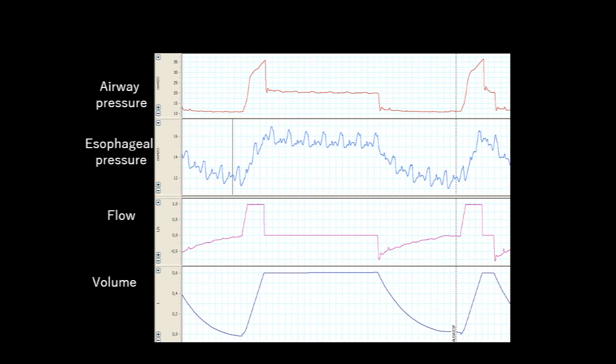During an inspiratory hold, we measure the difference in airway pressure between PEEP and plateau pressure. This is the total pressure generated by the respiratory system, 10 cmH₂O in this case. On the esophageal pressure, we measure the pressure swing at the same time point, which is the pressure generated by the elastic recoil of the chest wall, 3 cmH₂O in this case.